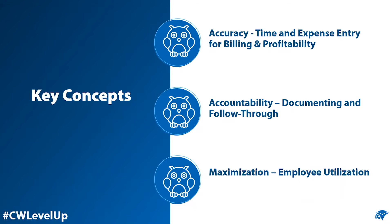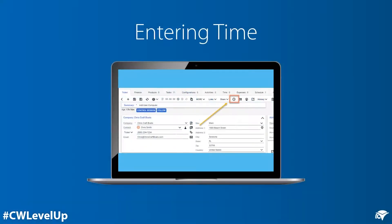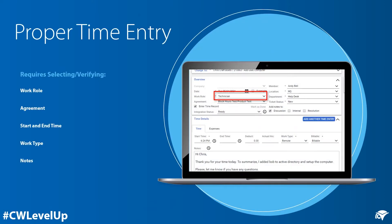Employees reviewing their timesheets daily and submitting weekly timesheets will increase accuracy in time tracking and create a culture of accountability. There are many ways to add time to a service ticket, project ticket, or activity. One of the simplest ways is to click on the time clock icon on the top of a ticket. When entering time, the employee should verify or select the proper work role.